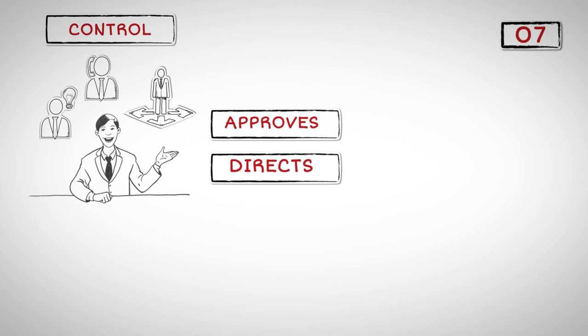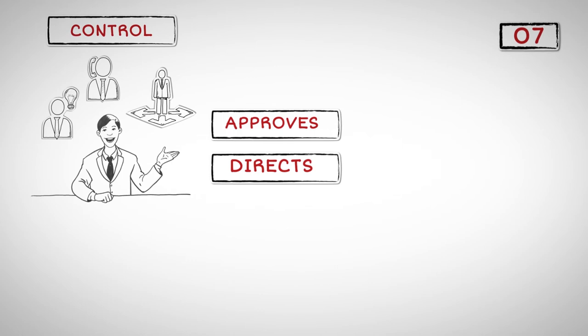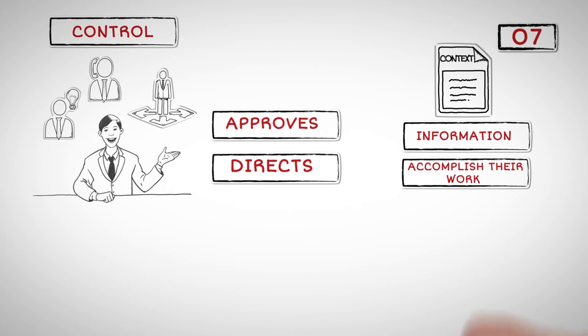Number seven. Leadership with control is when the boss approves and directs the initiatives, actions, and decisions of the team. On the other hand, leading with context is when bosses provide all the information so that team members make great decisions and accomplish their work without someone controlling their actions.